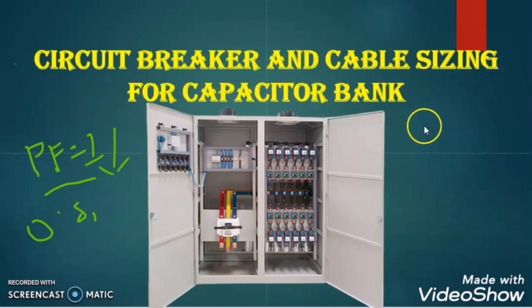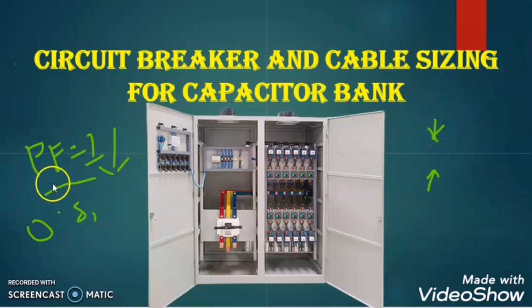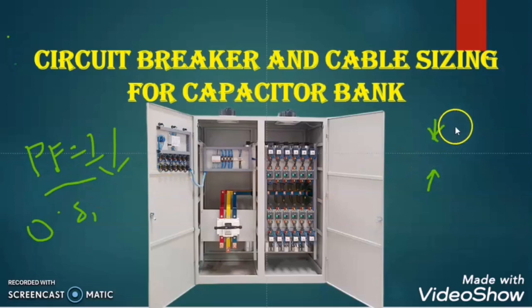As the inductive loads are lagging in nature, if we add some load which has leading nature, then the leading load will compensate with the load having lagging nature. In that way the power factor of the electrical installation will improve. All inductive loads have lagging nature and the capacitive loads are leading in nature. So the trick to improve the power factor is that wherever there is more inductive load, we add the capacitive load in order to compensate it.